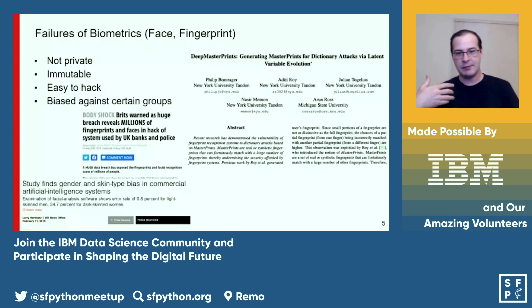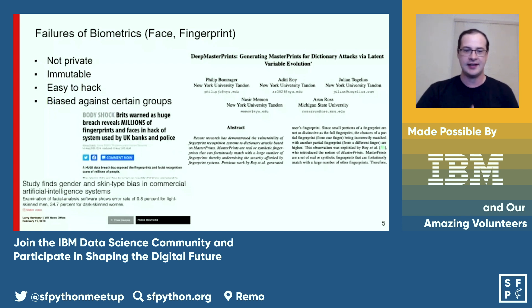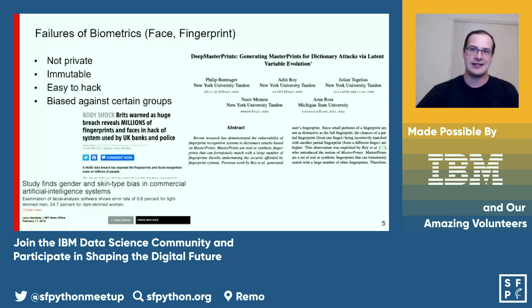Fingerprints may have a one-in-50,000 rate of matching somebody else's, but if you have a dedicated attacker, they can do much better. This all sums up to: authentication is not a technology problem — it's a human problem.